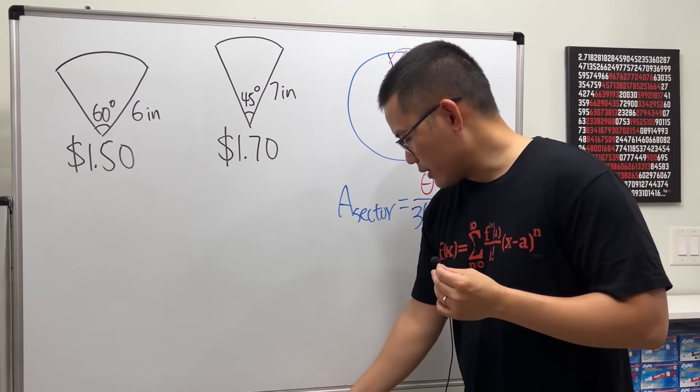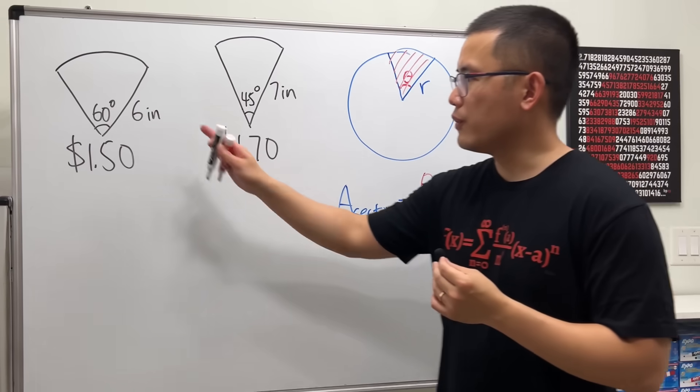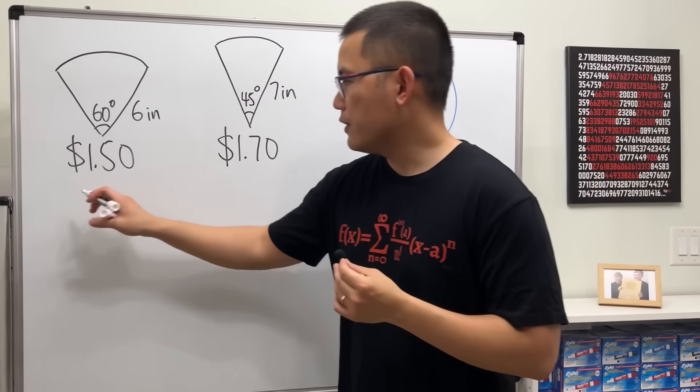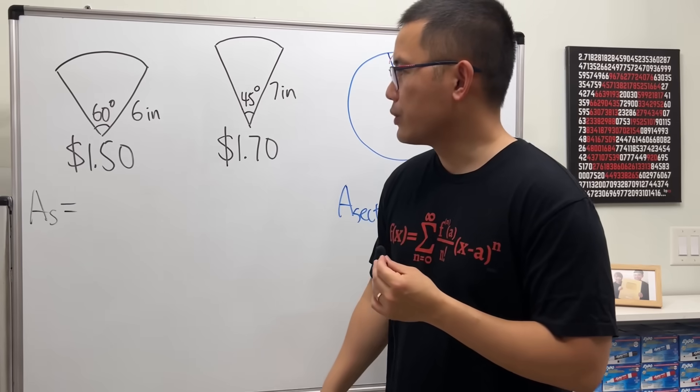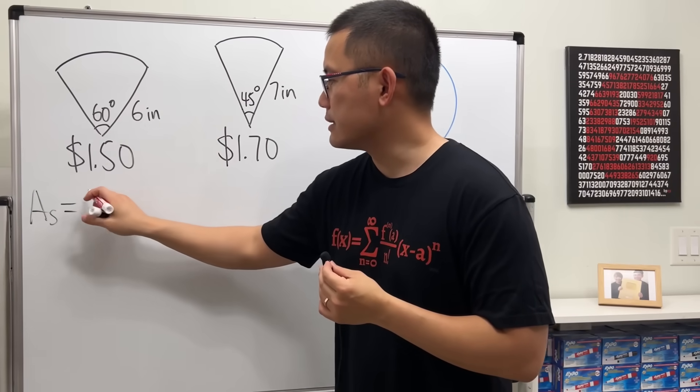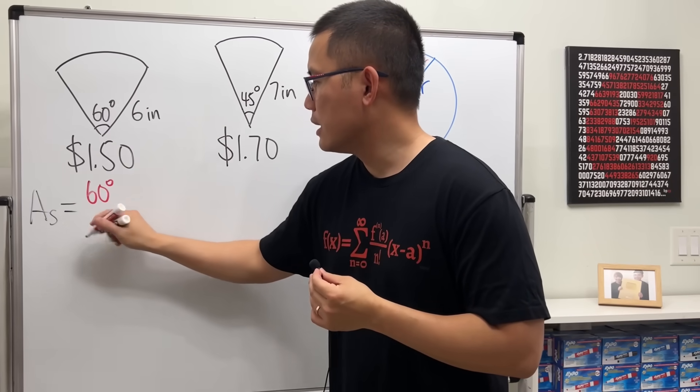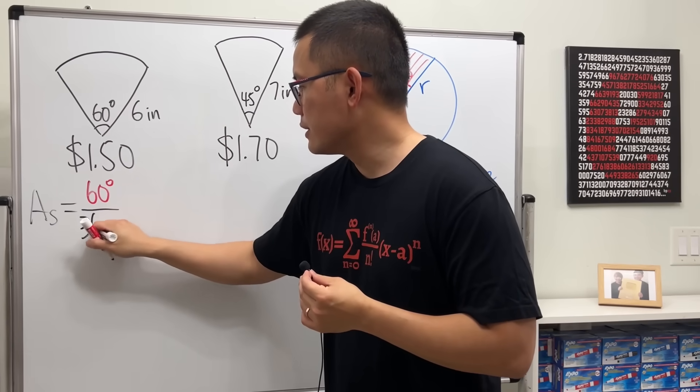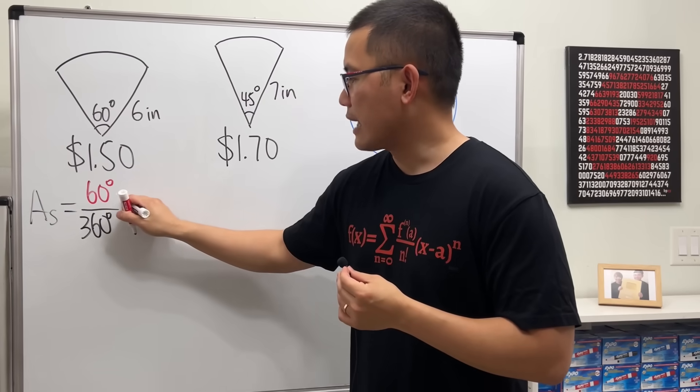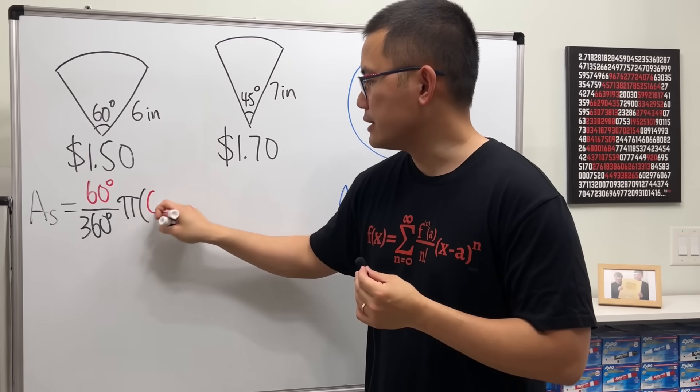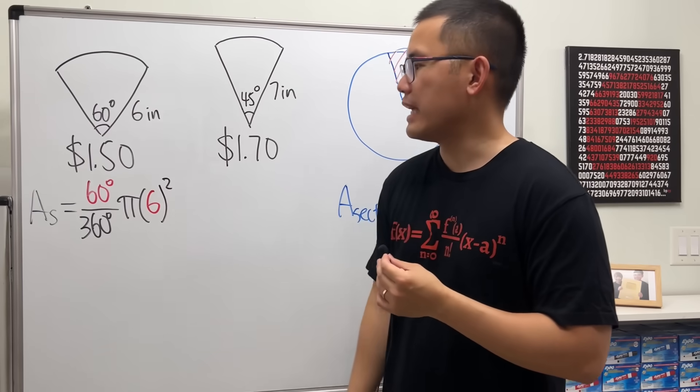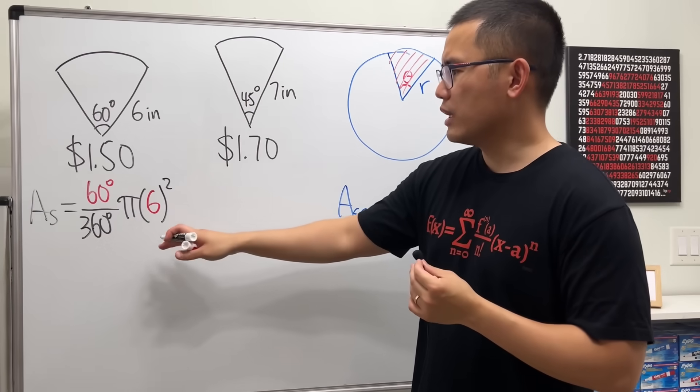So we can use this formula here to compute the area for the slices. For the first one, the area of the slice, it's equal to the angle here, 60 degrees, divided by 360 degrees times pi times the radius which is 6, and then we square that.